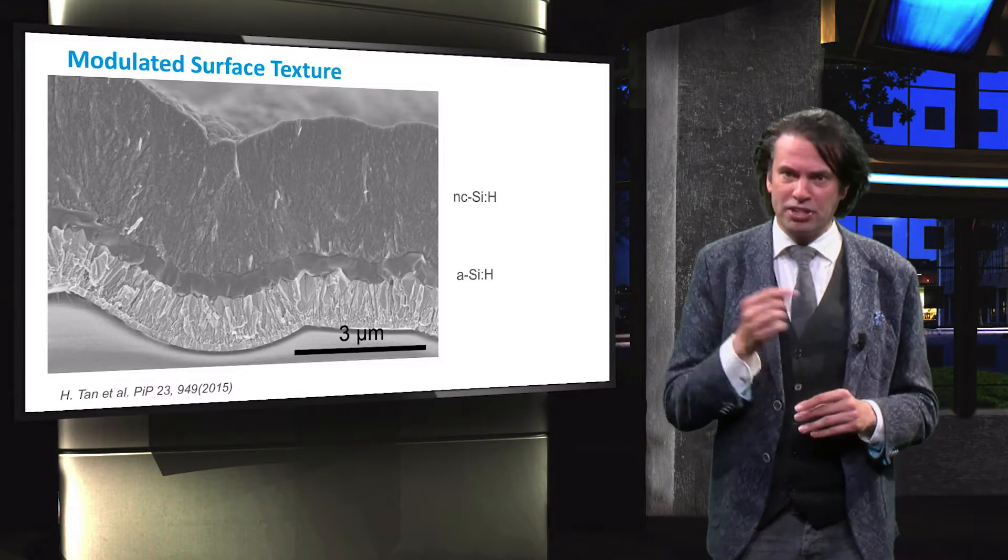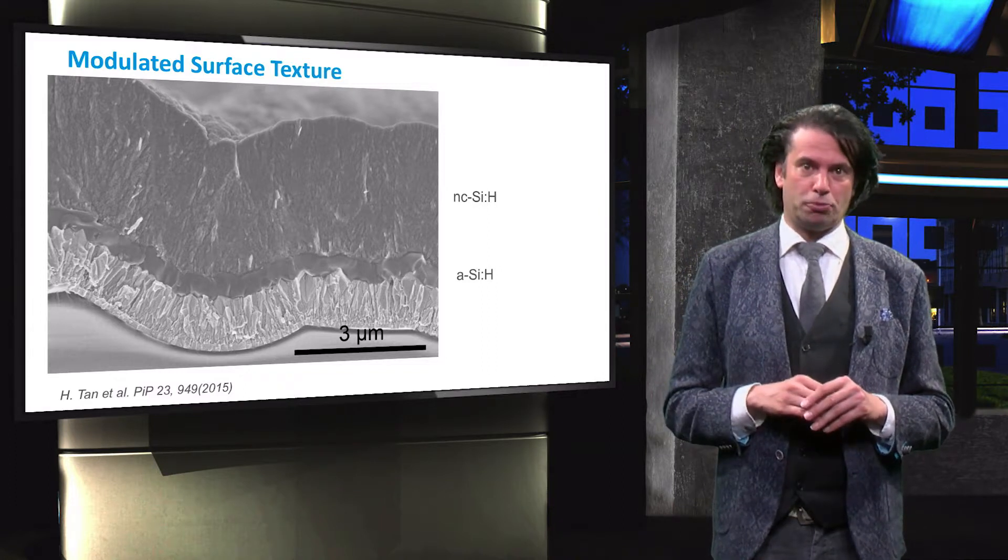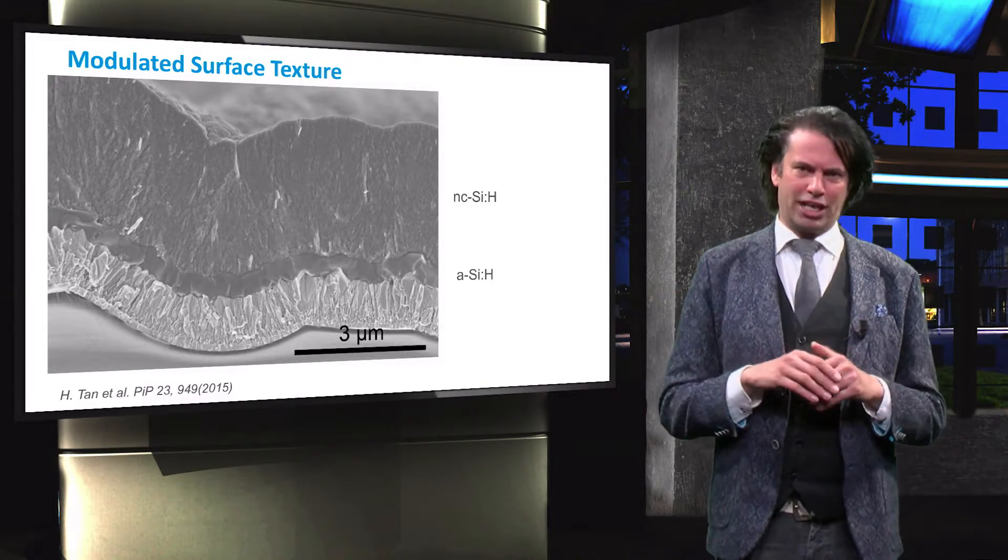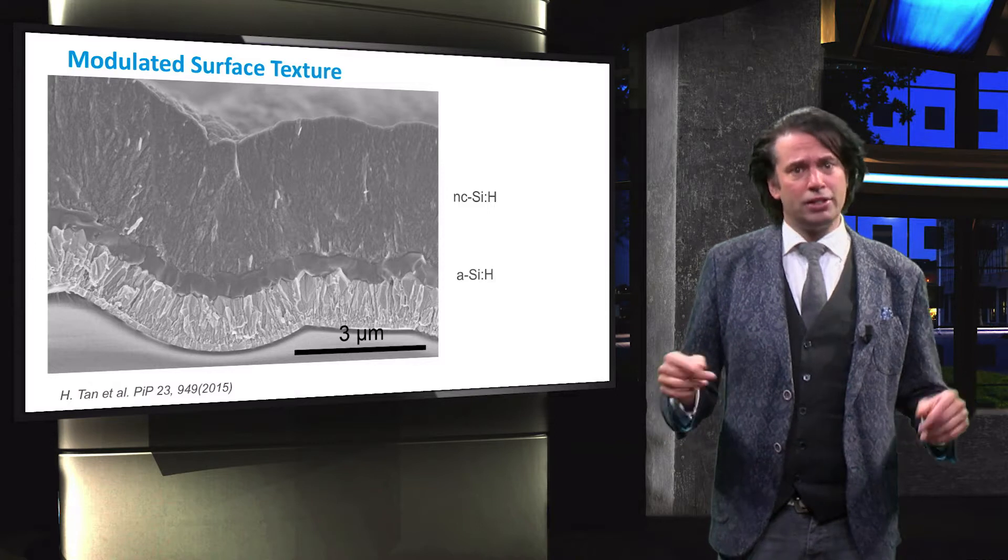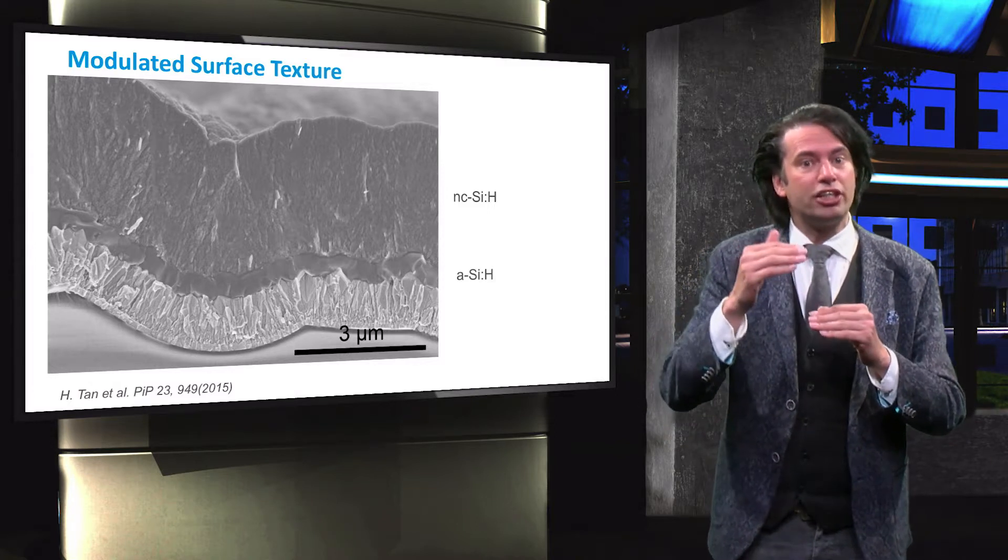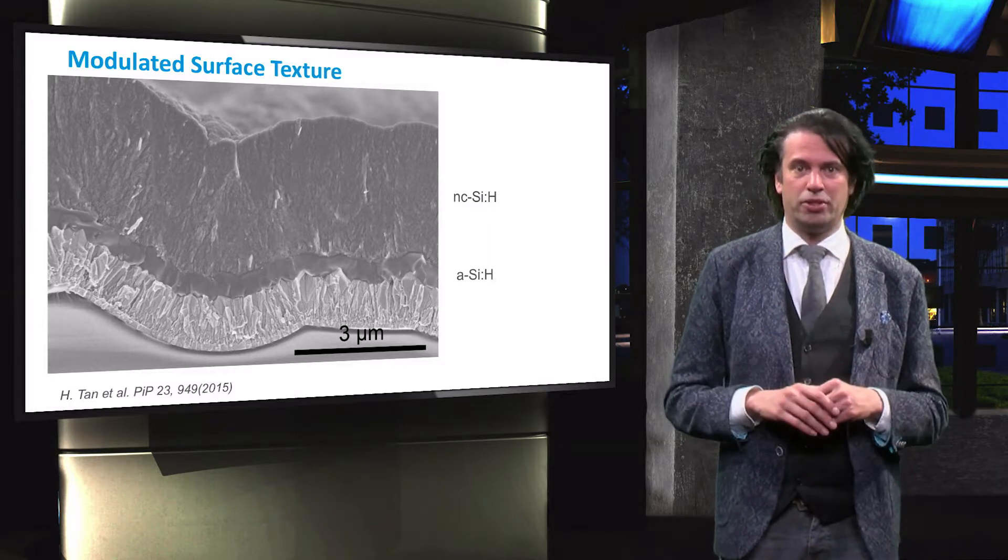The amorphous silicon top cell has been deposited on top of the modulated surface textured substrate. The amorphous silicon solar cell smooths out the nano-texture. Therefore, the nano-crystalline silicon bottom cell can be grown on the large-scale texture substrate without the generation of defect-rich filaments.